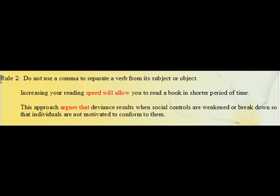Rule 2. Do not use a comma to separate a verb from its subject or object. For example: increasing your reading speed will allow you to read a book in a shorter period of time — notice do not put a comma there. Also: this approach argues that deviance results when social controls are weakened or break down so that individuals are not motivated to conform to them. Notice there's no comma after 'argues.'